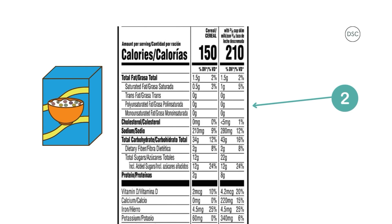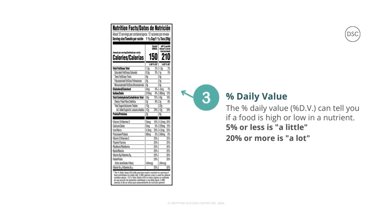If we were to have one and a third cups, we will get 150 calories, one and a half grams of total fat, 34 grams of carbohydrates, two grams of fiber, 12 grams of added sugars, two grams of protein, and so on. On the right side of the table, you can also see the nutrition facts if you were to eat this cereal with three-quarter cup of skim milk. Now let's move on to step number three, which is to look at the percent daily value.